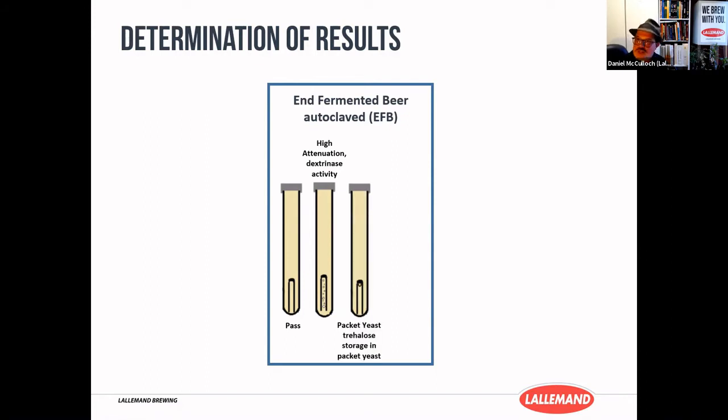Packet yeast, or you might still have a little bit of residual extract, and this is where you might want to pour that tube into another tube and incubate again. Or medium attenuation, so something like Belle Saison, where it's going to fill about half the tube and not all of the tube.